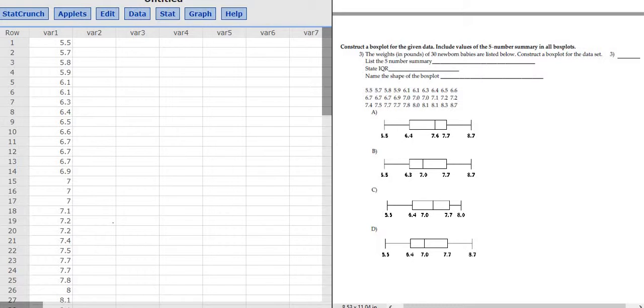Okay, so the first thing you do is type in the numbers into StatCrunch, which I've already done. So we have 30 numbers, and you can check here that, yep, 30 numbers.